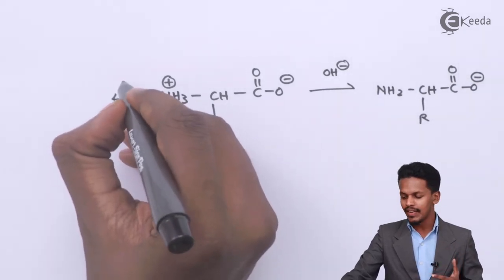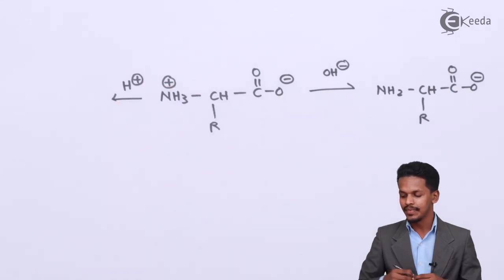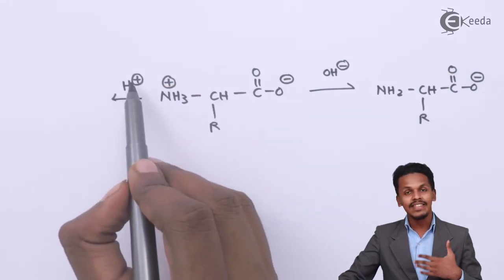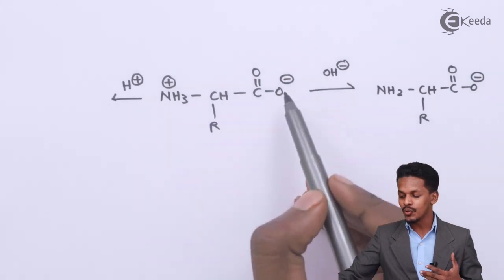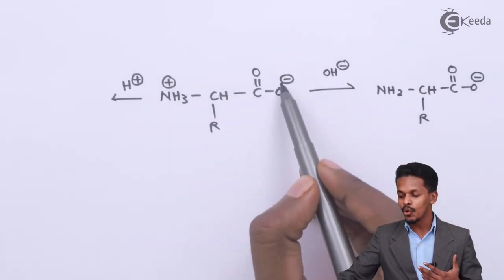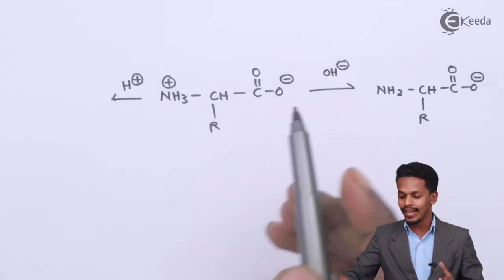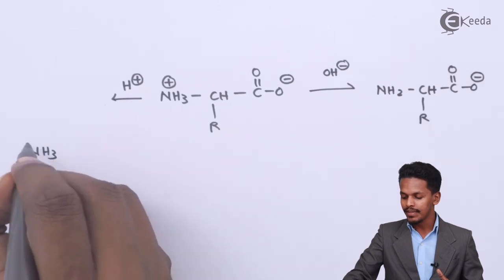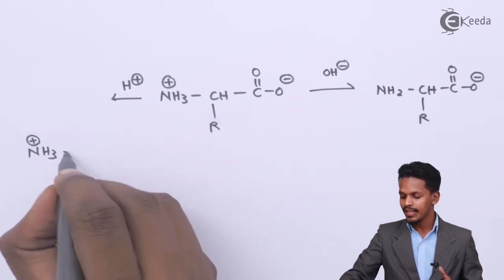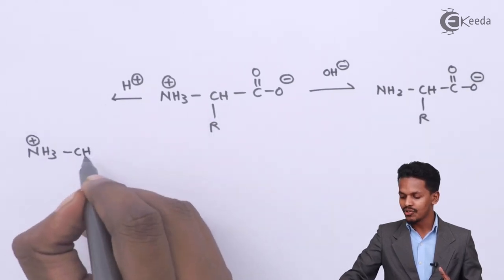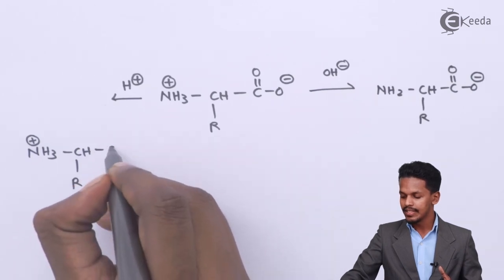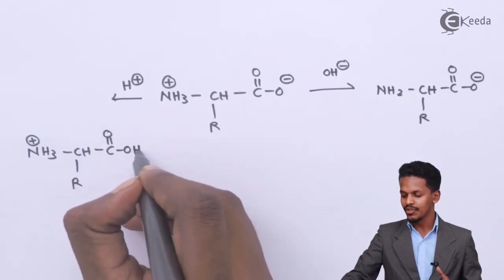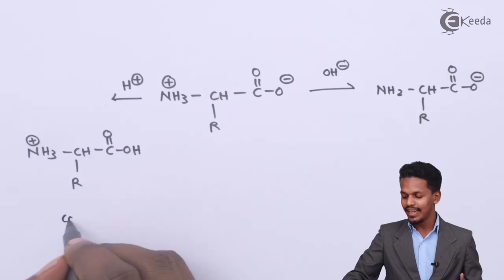And what happens if this zwitterion reacts in the presence of an acid? The H⁺ ion gets attached to the negatively charged O⁻, and we get ⁺NH₃-CHR-C(=O)-OH as a cation.